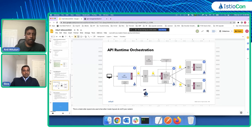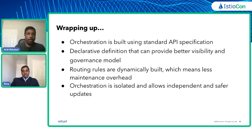Wrapping up — this orchestration framework is built using standard OpenAPI specification, and we use OpenAPI custom extensions to add additional functionalities to the API contract. This declarative definition of orchestration as code provides better visibility and a governance model. Traffic routing rules and resources are dynamically created at deployment time using the orchestration CLI tool and deployed to the target clusters. This approach makes for less maintenance overhead, and orchestration APIs are created without making any changes to the existing APIs, allowing independent and safer updates.